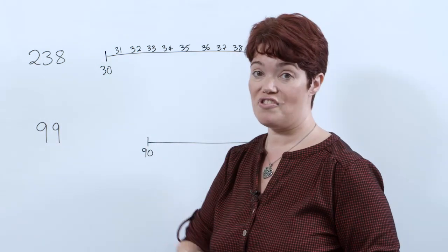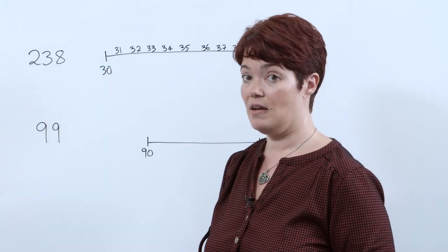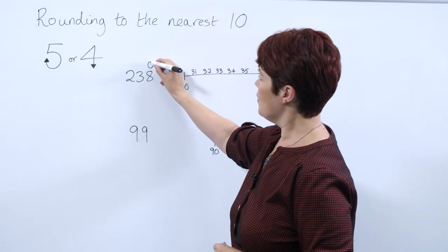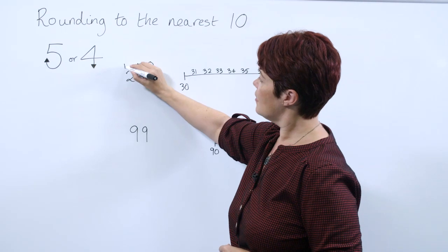So we're going to round 238 to the nearest 10. The first thing we're going to do is put our place value headings on there. So we've got our ones, our tens, and our hundreds.